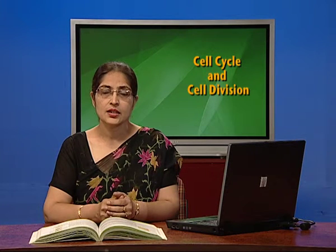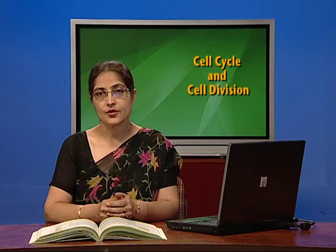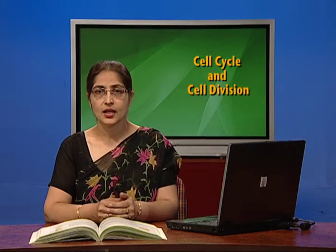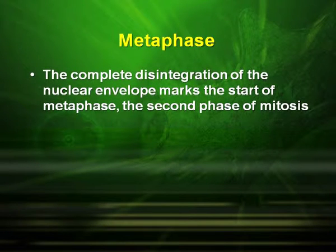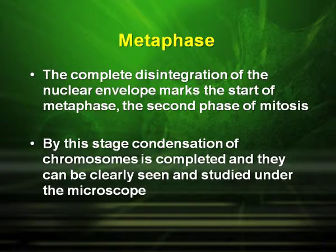The next phase of mitosis is the metaphase. The complete disintegration of the nuclear envelope marks the start of metaphase. By this stage, condensation of chromosomes is completed and they can be clearly seen and studied under the microscope.